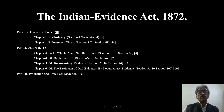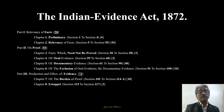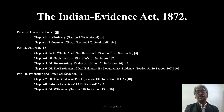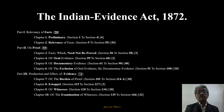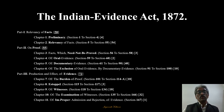Part 3 talks about the production and effect of evidence, covering 72 sections total. Chapter 7 talks about the burden of proof from section 101 to section 114A. Chapter 8 talks about estoppel from section 115 to section 117. Chapter 9 talks about witnesses from section 118 to section 134. Chapter 10 talks about the examination of witnesses from section 135 to section 166, which is going to be the topic of today's discussion. Chapter 11 talks about improper admission and rejection of evidence, covering only the last section, section 167.